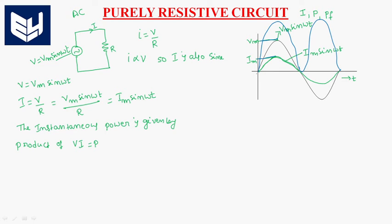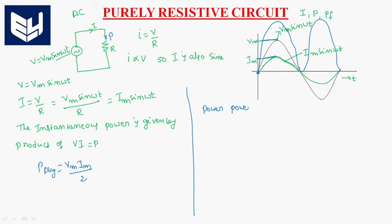The current fluctuates between 0 and the maximum value. So the average power from the source is given by P_average = Vm × Im / 2. That is the average power. So what is the power and power factor?